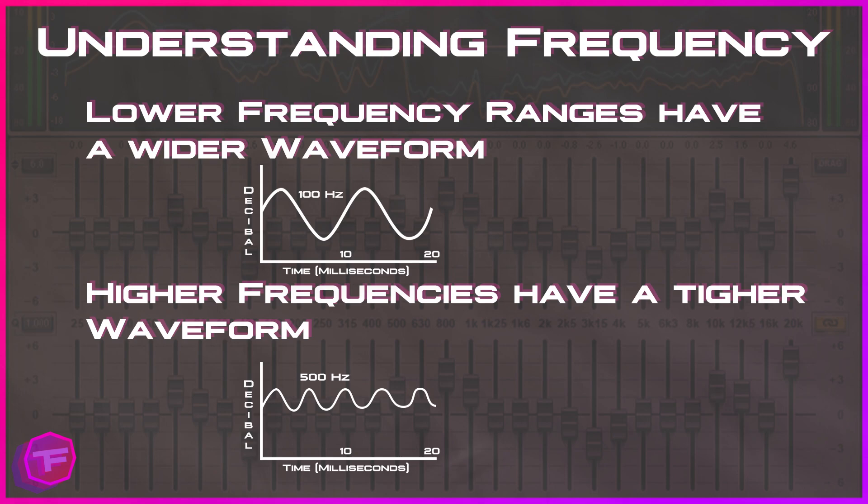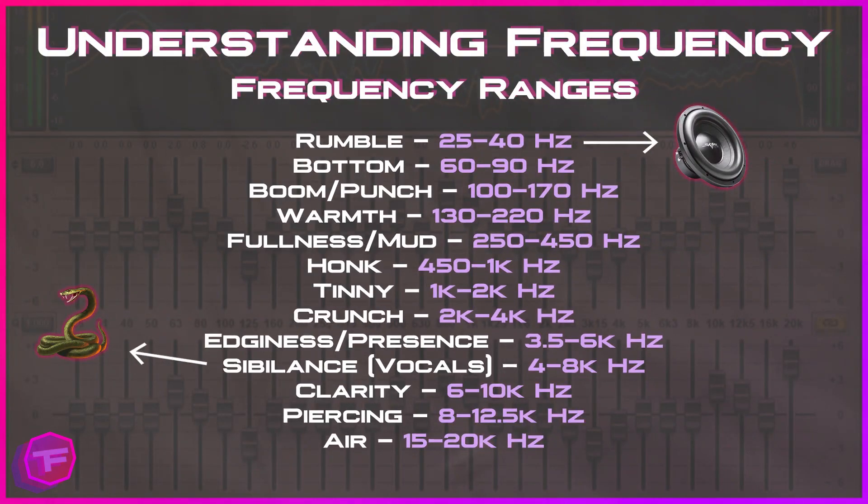For example, that 100 Hz waveform has a wider wave. A higher frequency will have a tighter waveform — the 500 Hz example on screen has more waves within that specific time period. What you need to understand is that there are 100 waves in one second with a 100 Hz frequency, and 500 waves within one second for a 500 Hz audio signal.